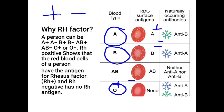O positive cannot give blood to a B negative person because B negative requires a negative donor, and positive cannot give to negative. The absolute universal donor for all blood groups is O negative, because O negative can give to both positive and negative recipients, though it can only receive from negatives. AB is known as the universal recipient, and the absolute universal recipient is AB positive, which can receive from both negative and positive donors.